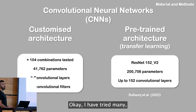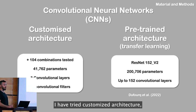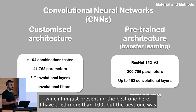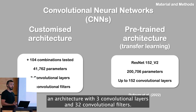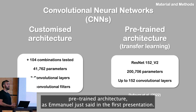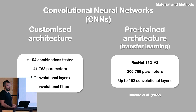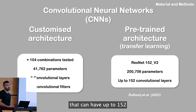I tried many combinations of architectures. I tried a customized architecture — I present the best one here — experimenting with more than a hundred configurations. The best customized one was an architecture with three convolutional layers and 32 convolutional filters. I also tested a pre-trained architecture: ResNet-152, which can have up to 152 convolutional layers.